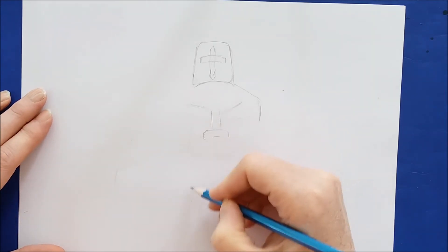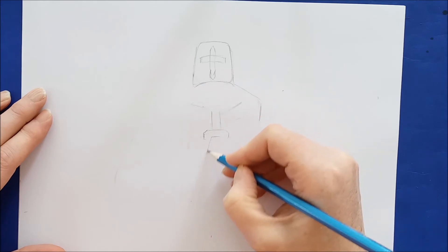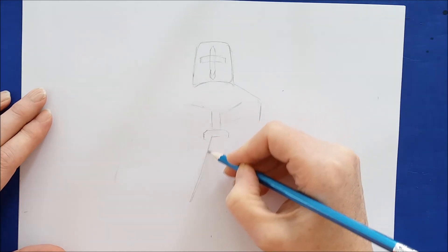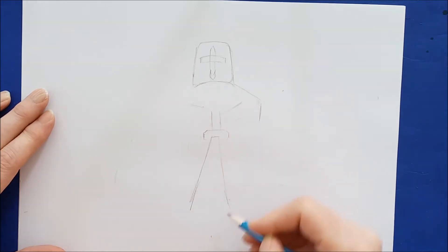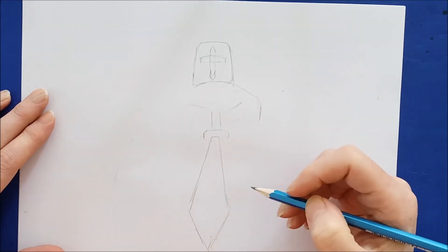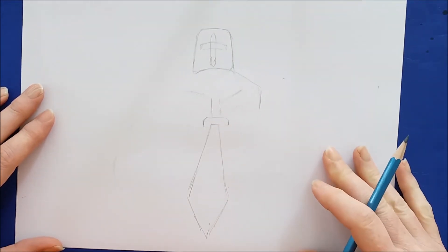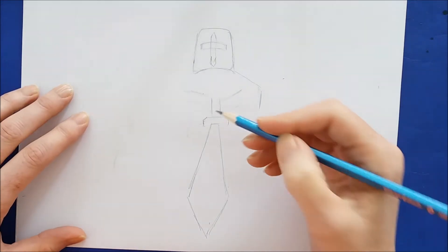Now the blade of the sword will be two long lines that go down, but they'll be wider at the bottom than they are at the top. This will give the illusion that this knight is standing tall above us and looking down.